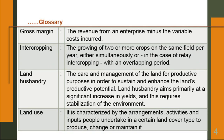Gross margin: the revenue from an enterprise minus the variable cost incurred. Intercropping: the growing of two or more crops on the same field per year either simultaneously or, in the case of relay intercropping, within an overlapping period. We will see intercropping in detail because crop management and cropping system is also a component of integrated farming system.